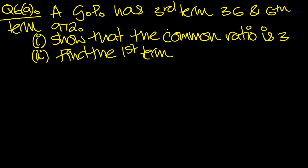So I've got the summary of the question above. The third term of a GP is AR squared, that's equal to 36. And the sixth term, which is AR to the 5, that's equal to 972.